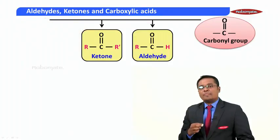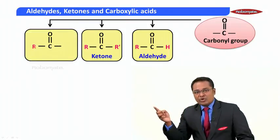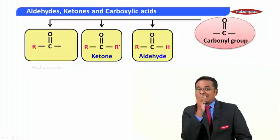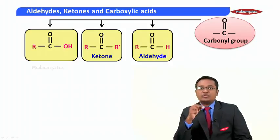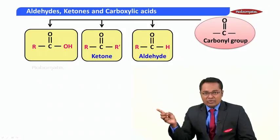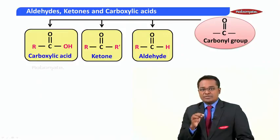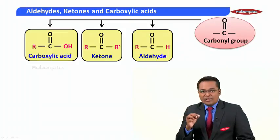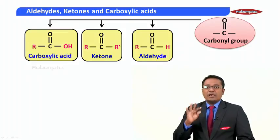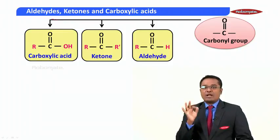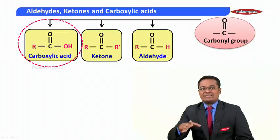In the third compound, one side of the carbonyl group has an alkyl group and the other side has a hydroxy group, which is an OH group — these are called carboxylic acids. There are four more compounds where a carbonyl group is present, but since those compounds are obtained from carboxylic acids, we know them as substituted acids.